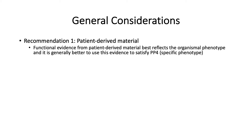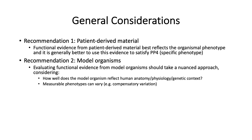Caution should be exercised when using evidence from patient-derived materials to satisfy PS3 or BS3. Assays conducted in the context of model organisms can provide powerful evidence of the effect of a variant, but can be difficult to interpret. The recommendations suggest a nuanced approach to evaluating model organism data that considers how well the model organism reflects human anatomy, physiology, and genetic context, also keeping in mind that measurable phenotypes can vary, and compensatory variation in the model organism can complicate interpretation.